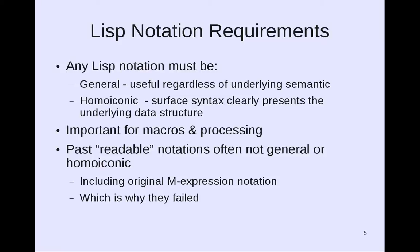So, what are the requirements for a LISP notation? Any LISP notation must be general and homoiconic. General means that it has to be useful regardless of the underlying semantic. Homoiconic means that its surface syntax needs to clearly present the underlying data structure — these are important properties for things like macros and processing various data in lists. Sadly, past readable notations were often not general or homoiconic, including, for example, the original M-Expression notation of LISP. And this is why those other readable notations failed.